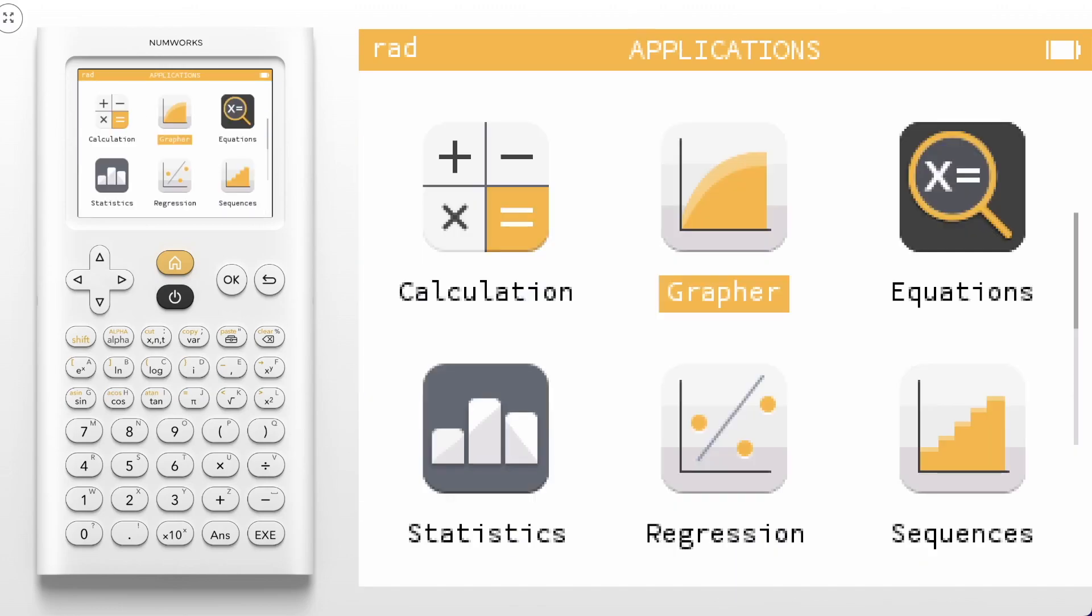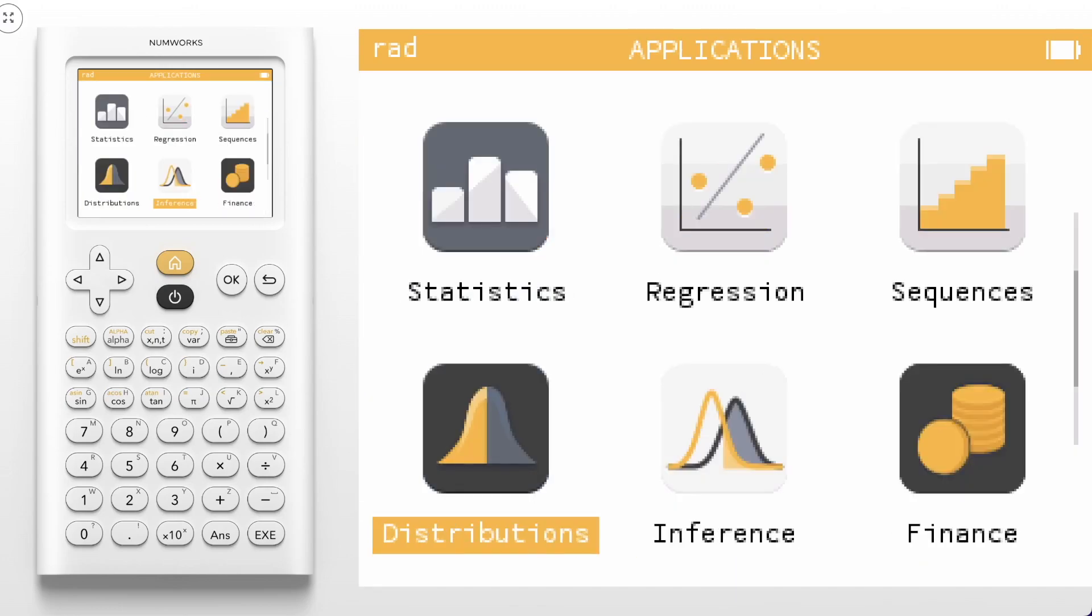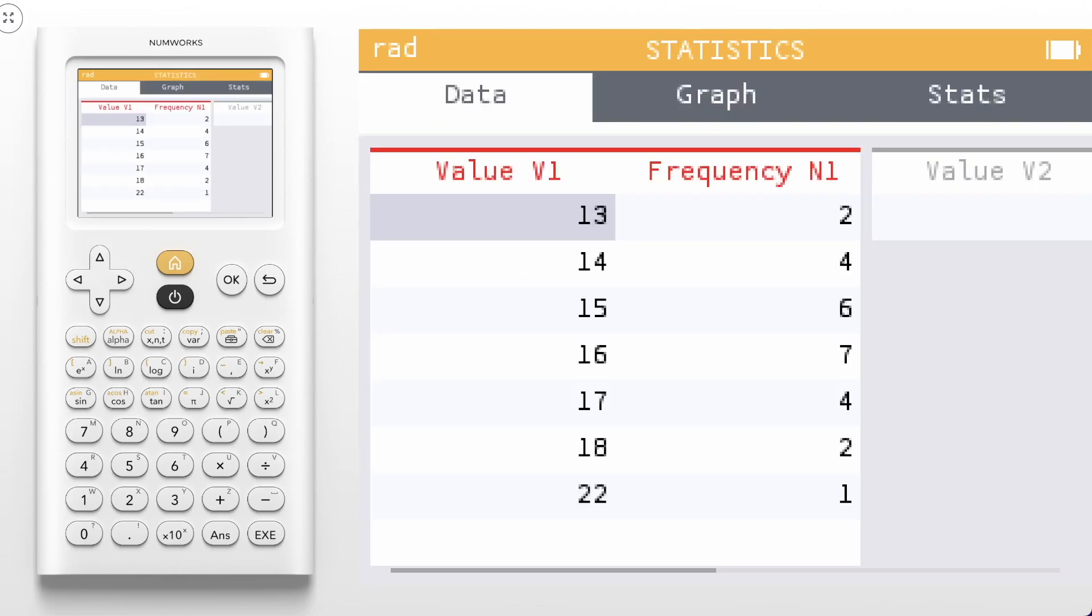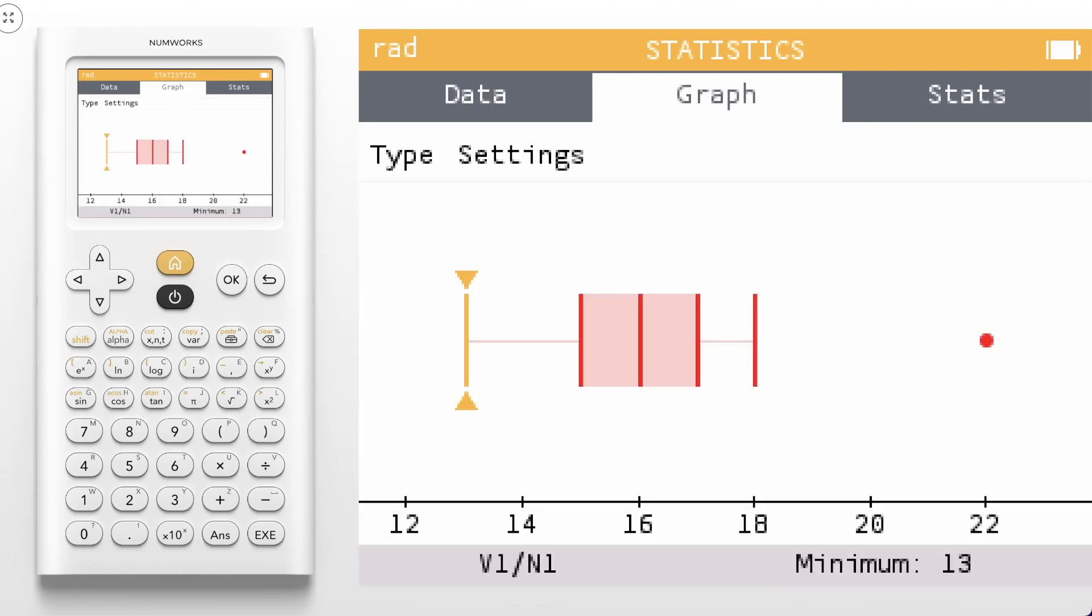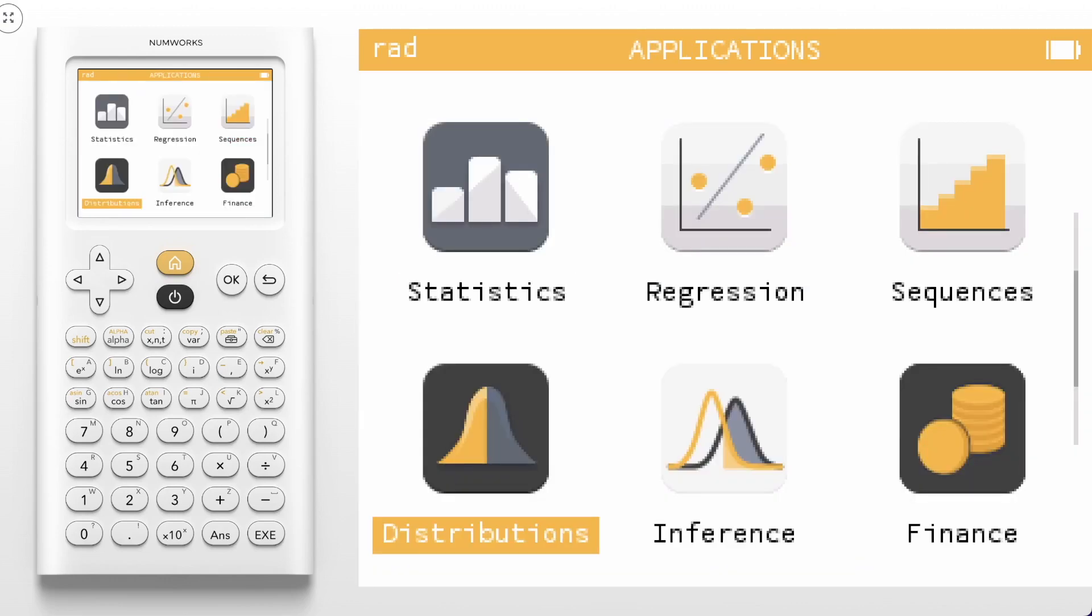For those statistics topics, we've got four applications for you. In the statistics application, you can see I've already entered some data. If we head up and over to the graph tab, we can select which graph we'd like to use. For example, if I select a box plot, I can navigate through and see the five-number summary located at the bottom below my axis. The distributions and inference application have some great interactive visuals.